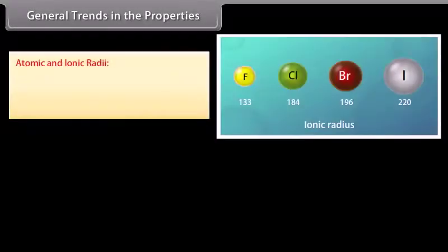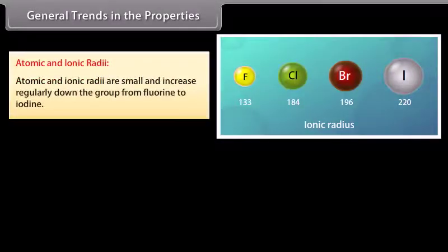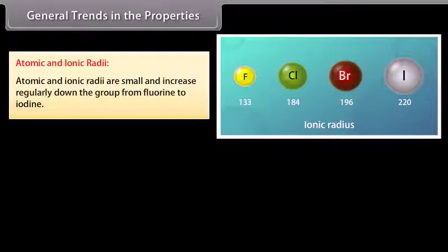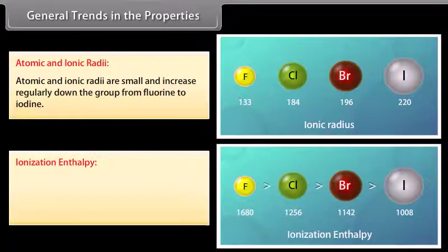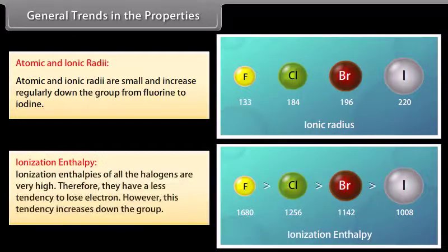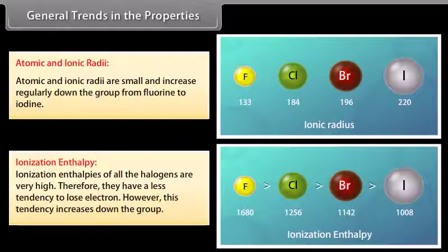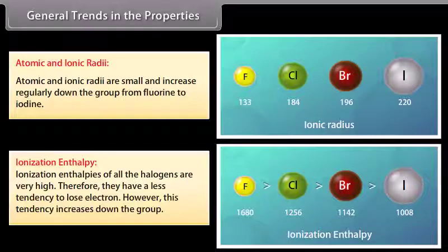General trends in properties — atomic and ionic radii: Atomic and ionic radii are small and increase regularly down the group from fluorine to iodine, because new electronic shells are added. Ionization enthalpies of all halogens are very high; therefore they have a lesser tendency to lose electrons. However, this tendency increases down the group because the distance of the valence shell from the nucleus increases.